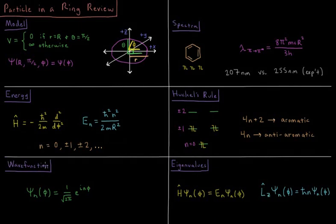Then our wave functions are going to be normalized as following. Psi n of phi is 1 over the square root of 2 pi times the complex exponential e to the i n phi.